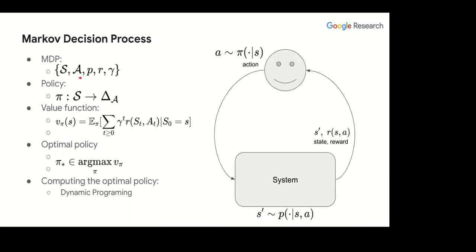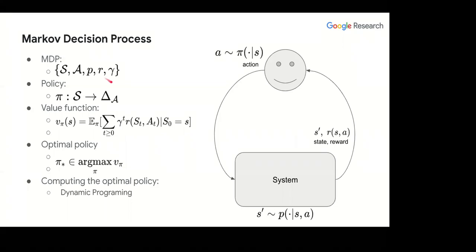An MDP is a set of states S, a set of actions A, a Markovian transition kernel P giving the probability of moving to a new state given a state and action, a reward function depending on state-action pairs, and a discount factor gamma that weights future outcomes. The policy is a mapping from states to a probability distribution over actions — I will consider mostly stochastic policies in this talk.